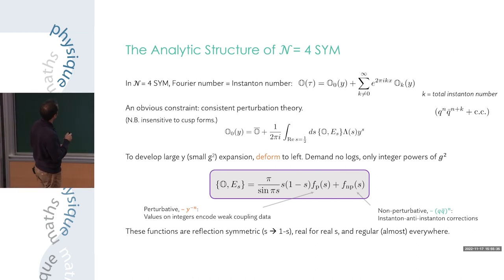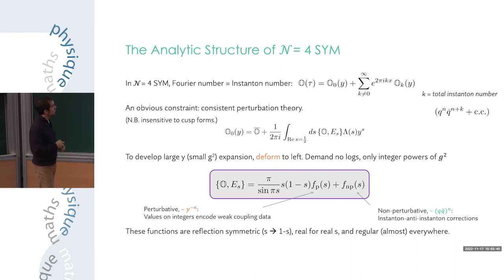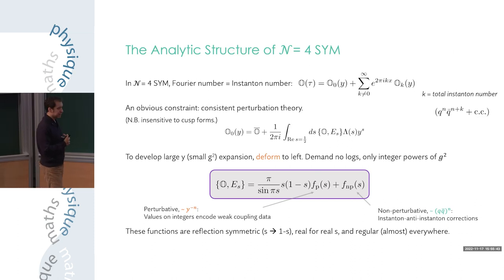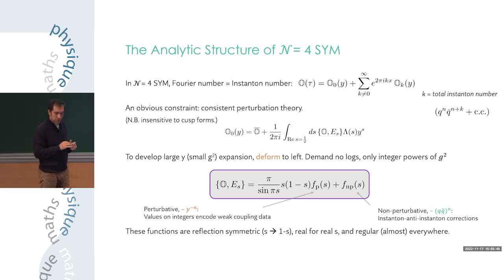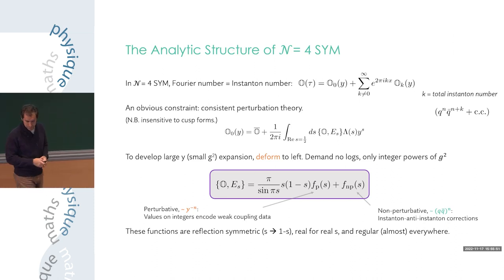The overlap has two pieces: a perturbative part f_p(s) with poles encoding the weak coupling data, and a regular function f_np encoding possible non-perturbative effects augmenting the perturbative expansion. These functions of s are reflection symmetric under s → 1−s, are real for real s, and are regular almost everywhere save for a possible pole at s=1 or its reflection, which must cancel between the two to give a regular overlap.